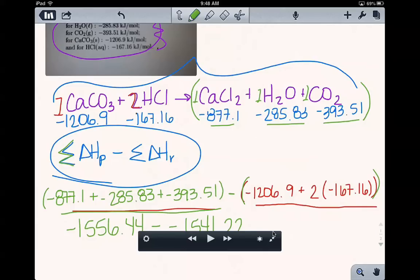And so now to do the final solving for this, remember, subtracting a negative is just like adding a positive. And so this is going to work out to be negative 15.22 kilojoules.